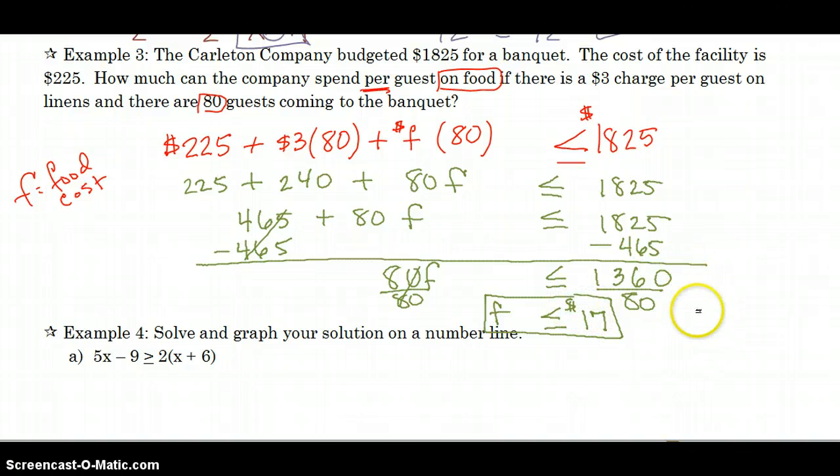So they can spend at most 17 dollars per person. So the way you would write that answer is at most 17 dollars. It can be the cost of food per person. If they spend any more than 17 dollars, they're going to go over their budget.